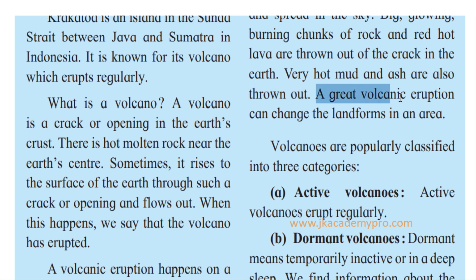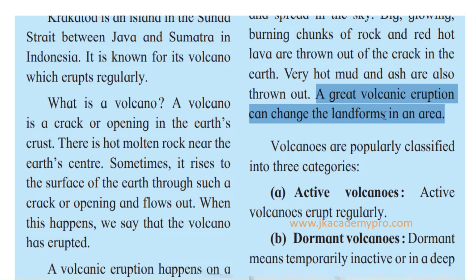A great volcanic eruption can change the landforms in an area. All these things come out and spread through a large area, so the whole landform changes. Close to the volcanic eruption, everything gets destroyed — all living things: plants, animals, human beings. A layer of molten rock spreads out, and then after many, many years it solidifies. So the whole landform and the whole area over there has changed.